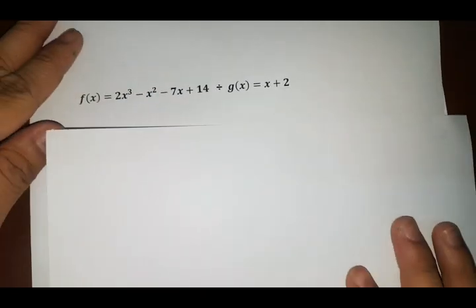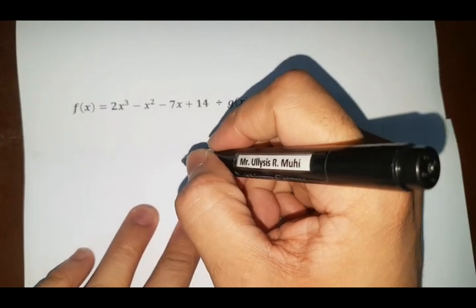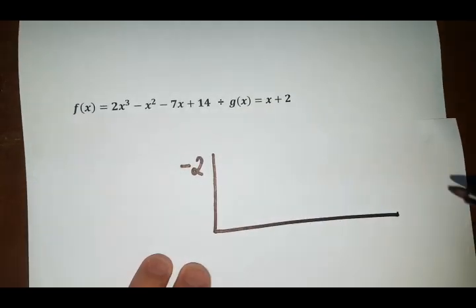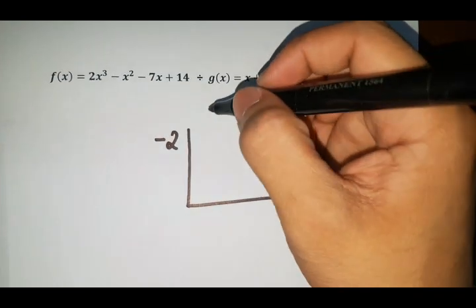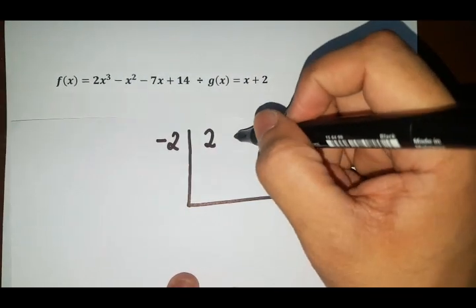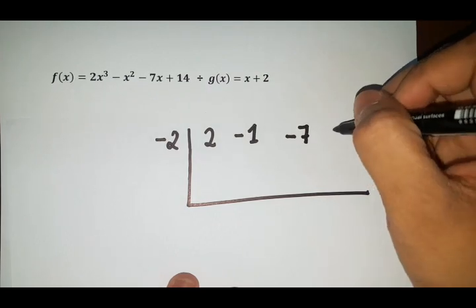Let's go now with our last example. So x is equal to negative 2. Again, get the coefficient. So 2, negative 1, negative 7, and 14.